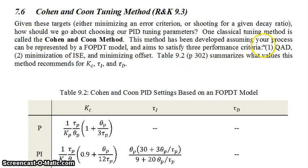One, you want your response to be QAD or quarter amplitude decay. Second, you want to minimize the ISE and you want to minimize offset. Table 9.2, which in your text is on page 302, summarizes what values this method recommends for your three different tuning parameters.